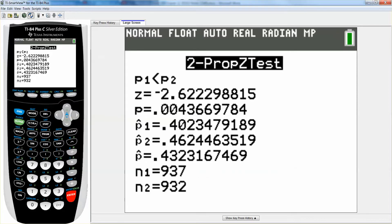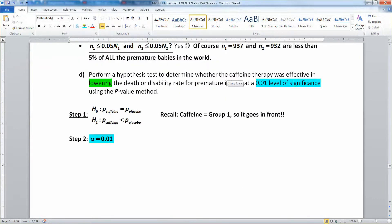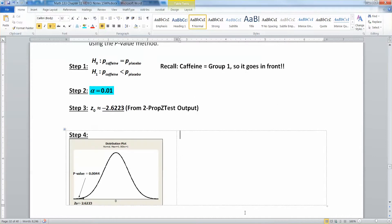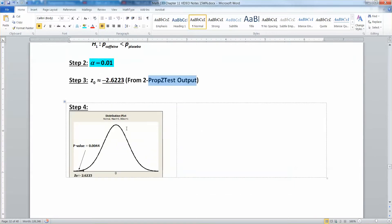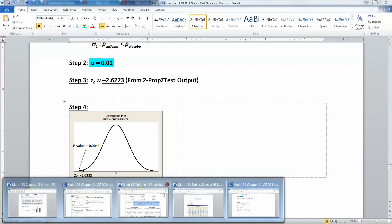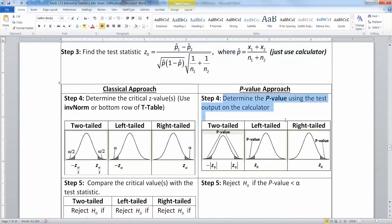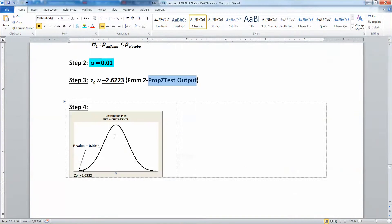We're going to go down to calculate and press enter, and we will find that the z score is negative 2.622. While we're on the subject, the p-value is 0.00444. So z0 is negative 2.6223, and that came from the 2-Prop-Z test output. I drew a picture here to match the left tailed picture for the p-value method, so you want to draw a left tail, put z0 down there at the bottom, and label your p-value which is 0.0044.